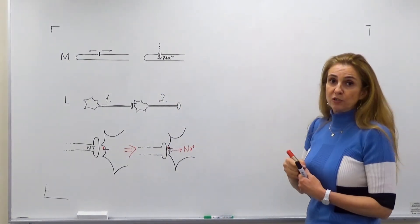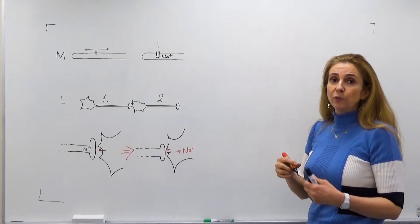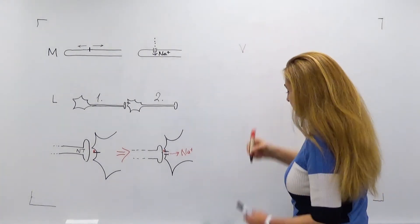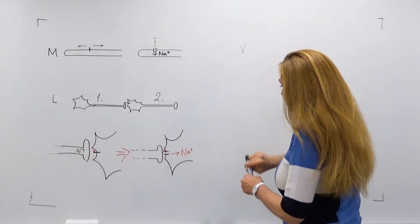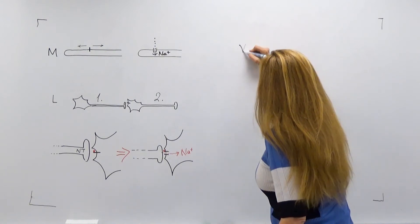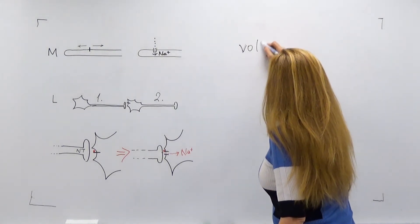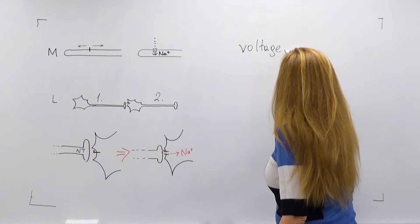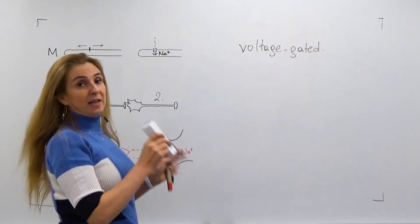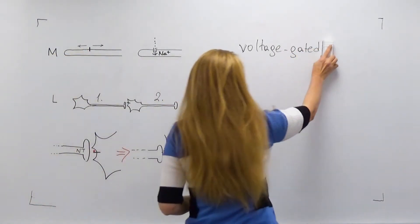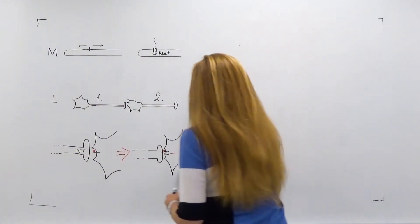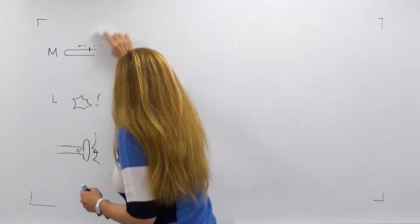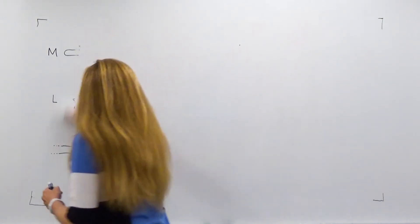Action potentials, by contrast, are formed by voltage-gated channels — this is the first difference. The second difference is that local potentials can be graded, whereas action potentials are in all-or-none form.